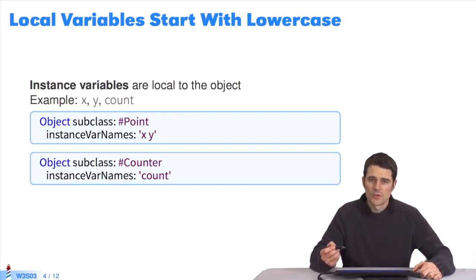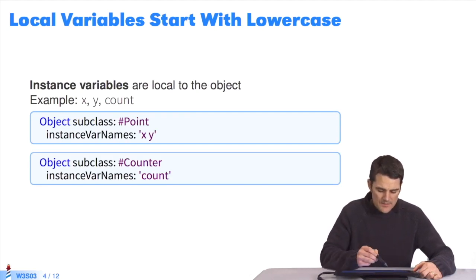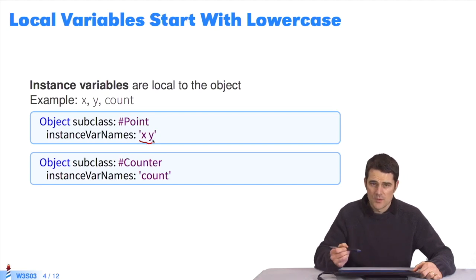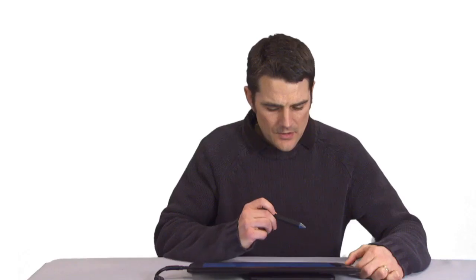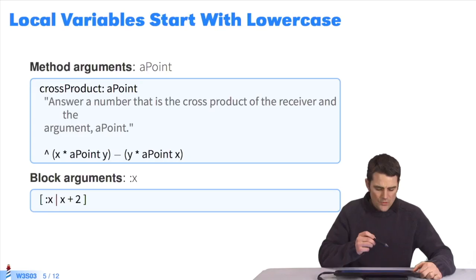Other types of local variables. For example, there are instance variables in the object which are local to it. There are two of them here, x and y. They always start with lowercase. As for local variables, there are also the method's arguments here. In a point, a is lowercase, x. Because this variable is also local to the method.